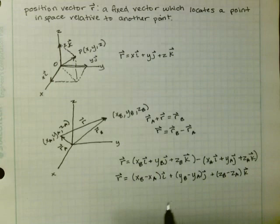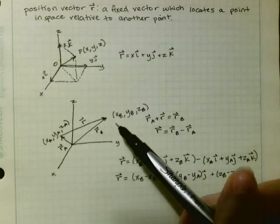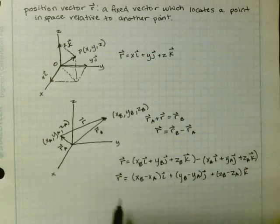So now we can use this basically with any two points given. So if you're given a point like this and a point like this, you can find the position vector just by using this simple equation.